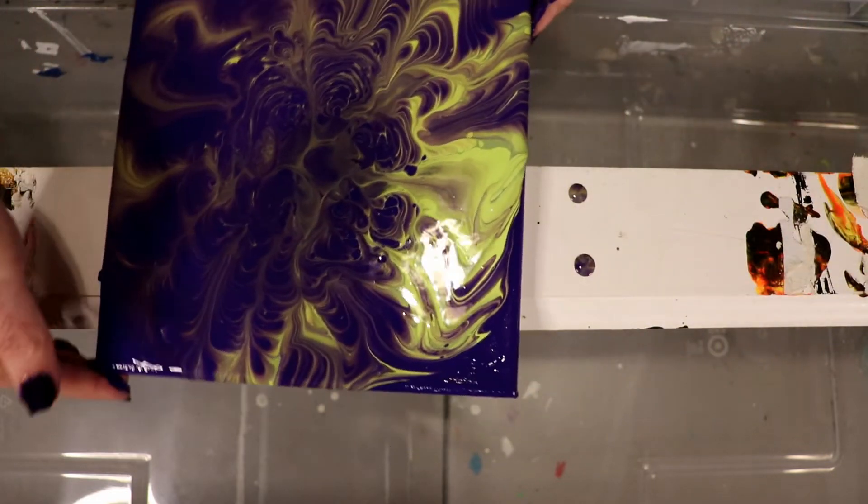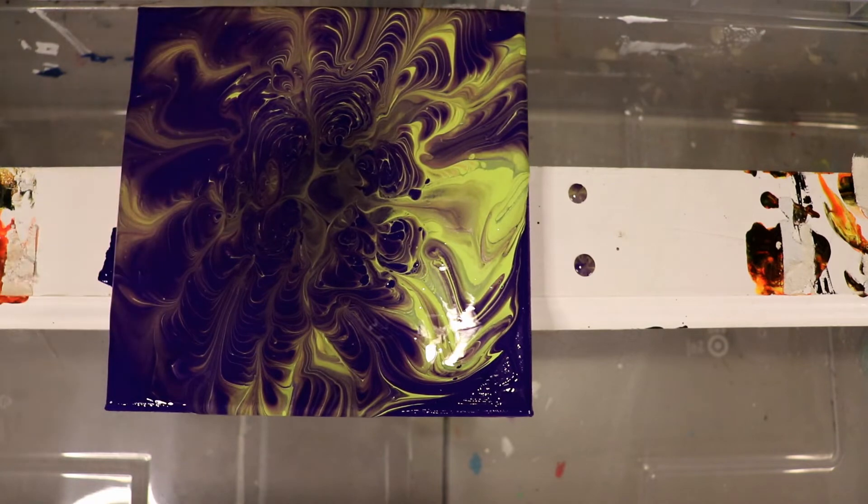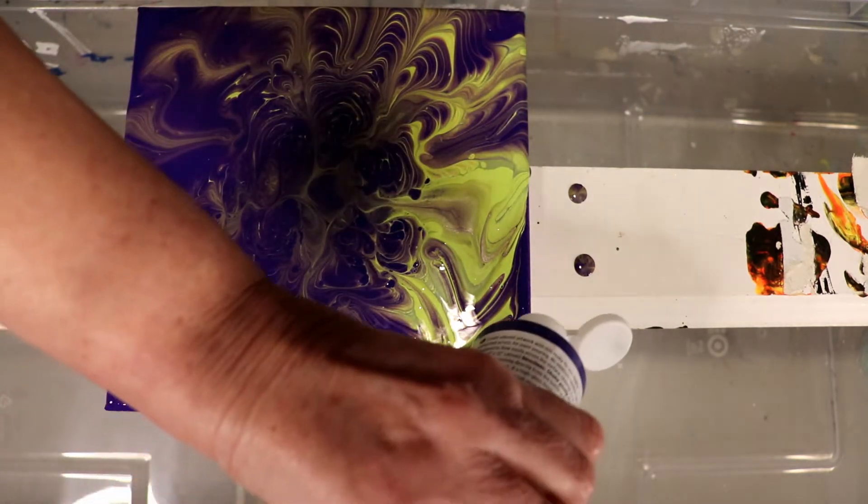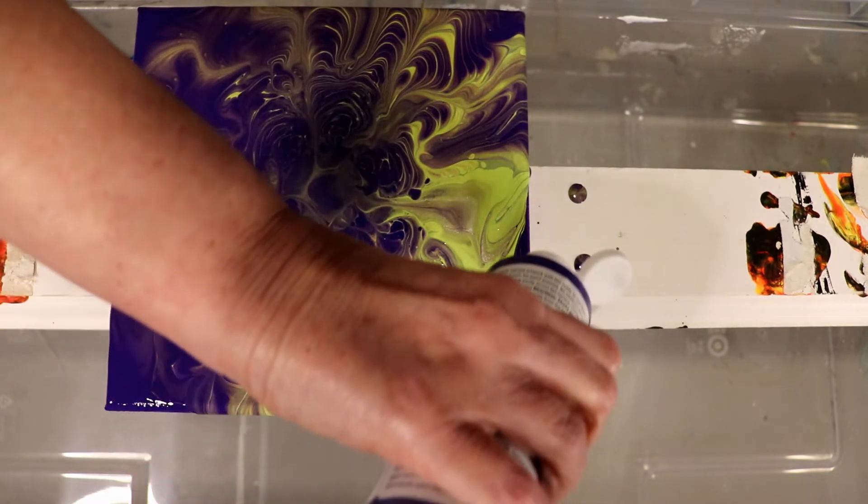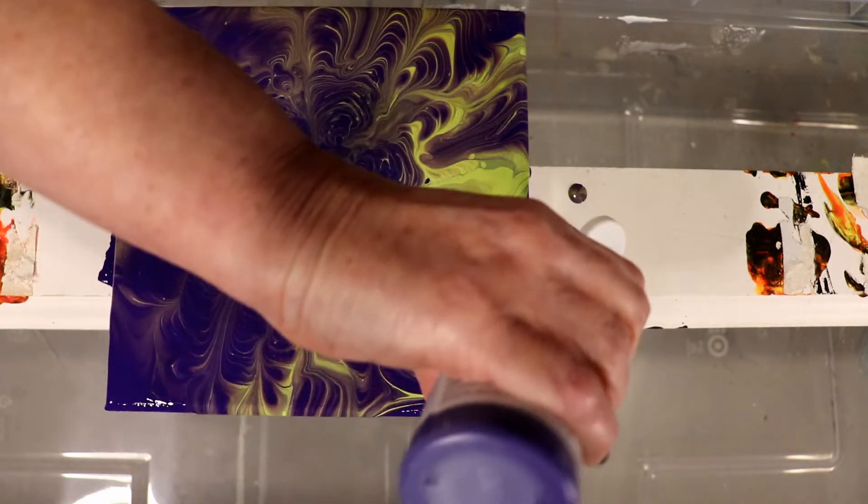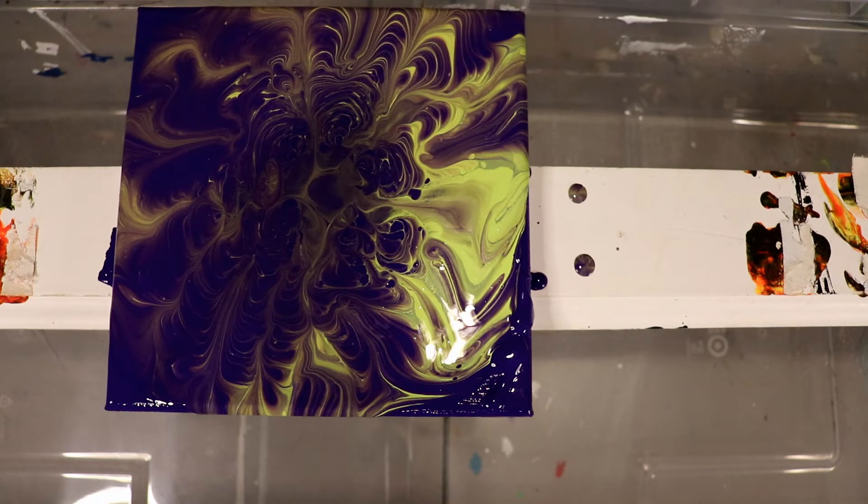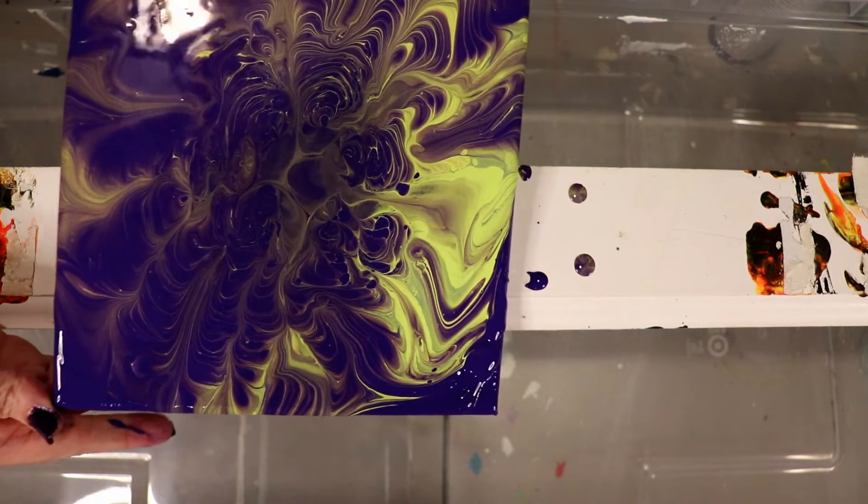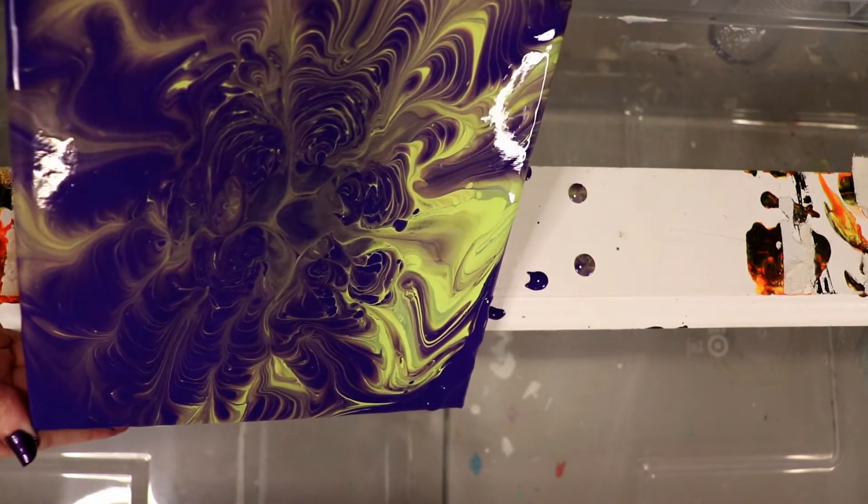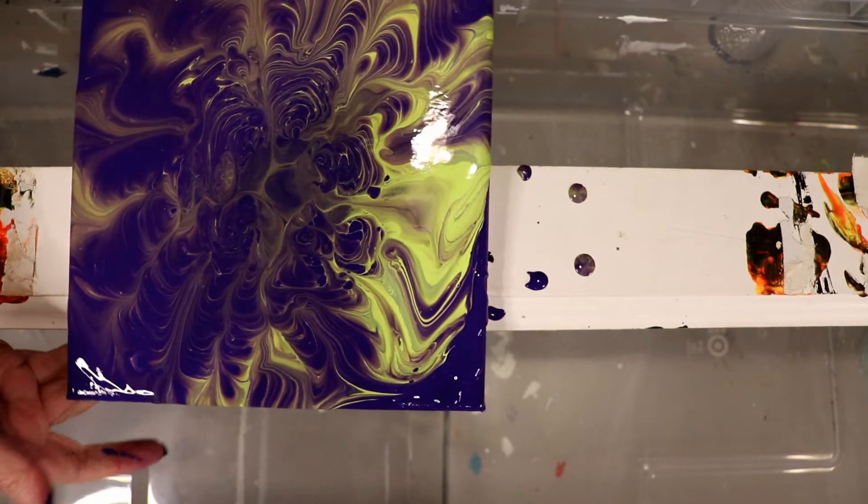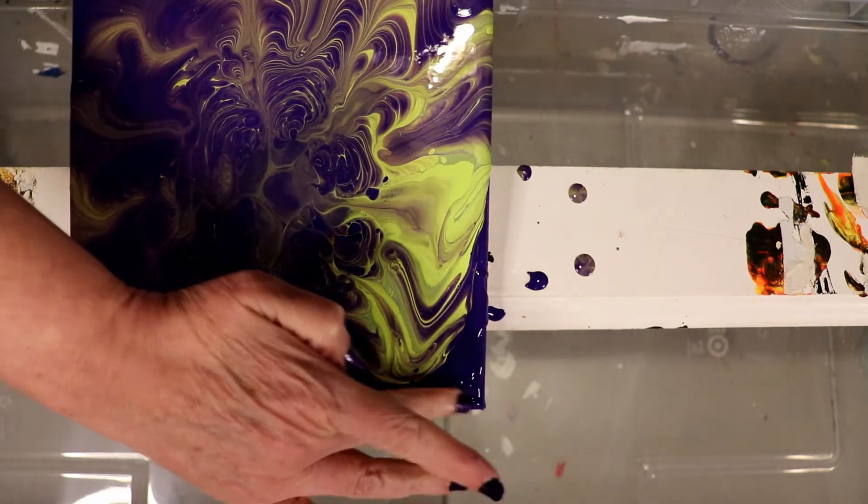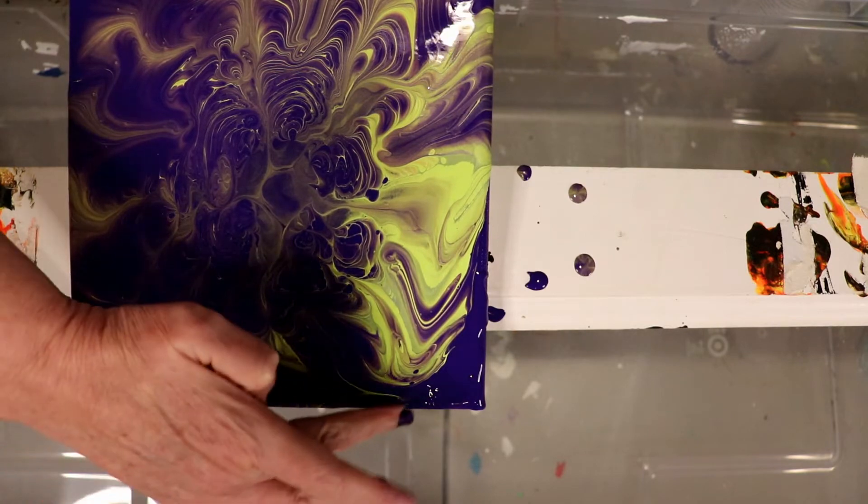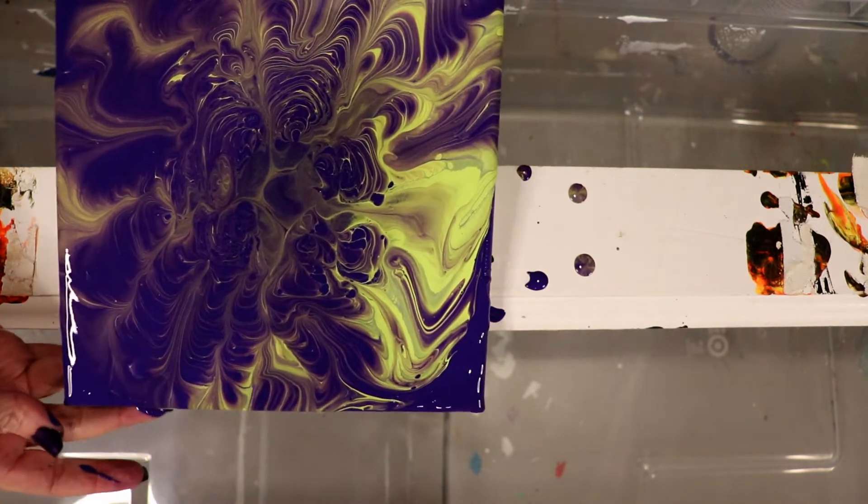It's not wanting to move in that corner, so I'm going to loosen it up just to get a little bit better flow there. That's the thing about paint pouring, you're going to get messy.